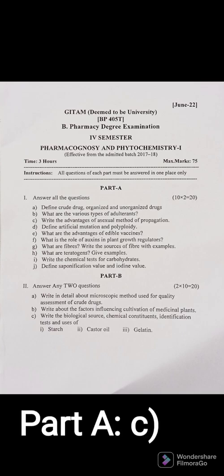Question 1C: Write the advantages of the sexual method of propagation. The sexual method of propagation is nothing but vegetative propagation, where we use plant parts like root, stem, stolons, and suckers. The advantages are: easy germination, no need to wait for seeds, hybrid quality can be achieved, and a good quantity of phytoconstituents can be obtained.